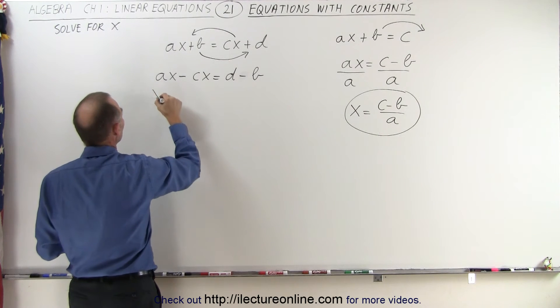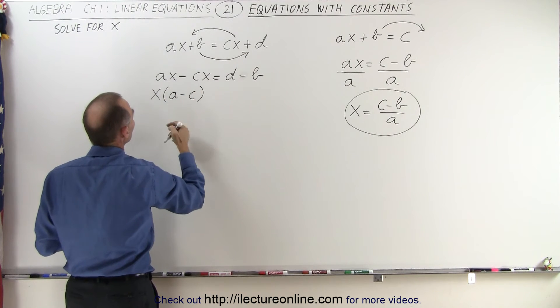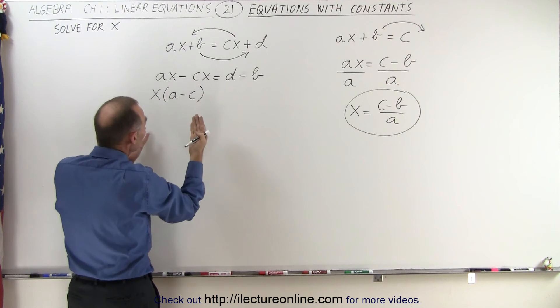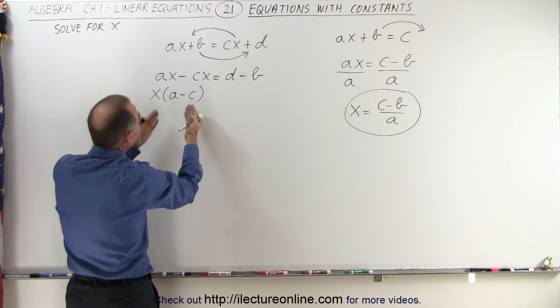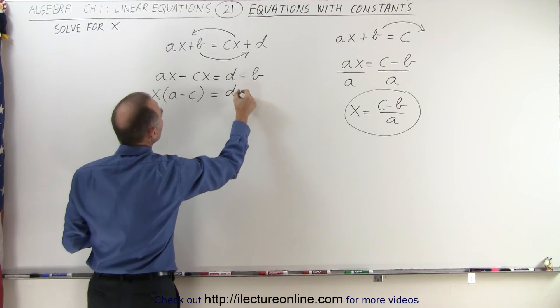So that means I can write this as X times A minus C. In other words, if A is a number and C is a number, then A minus C would be a number, whatever the number is, which is A minus C multiplied times X. That would then be equal to D minus B.